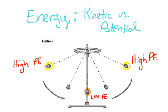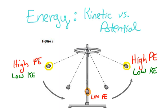Now in those areas where there's high potential energy, there's going to be low kinetic energy, because that's where the bob would be moving slowest. And that point where the bob is moving the fastest would have the highest kinetic energy.